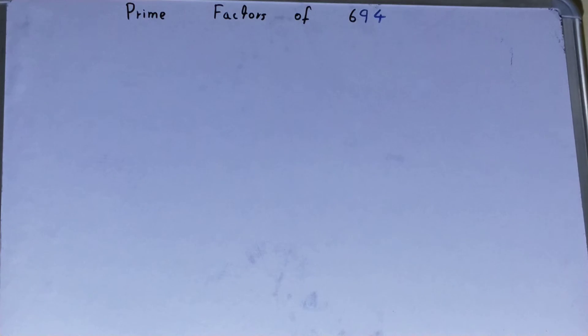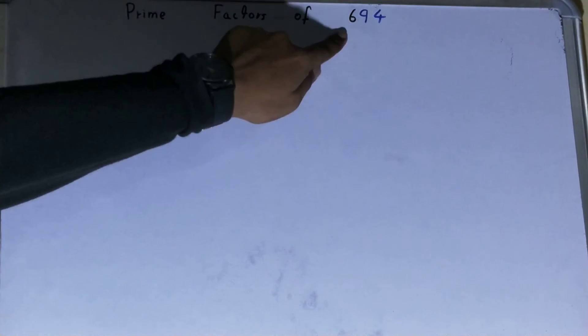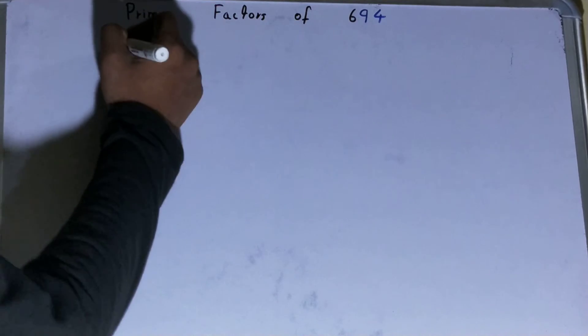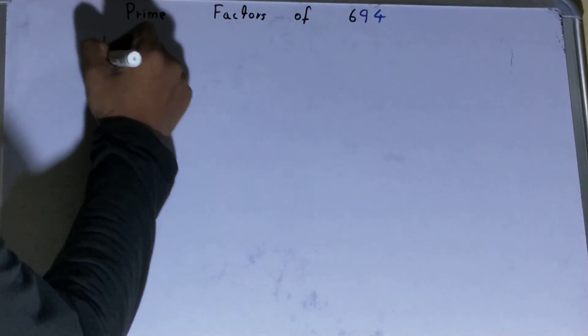Hello friends, and in this video I'll be helping you with the prime factors of the number 694. So let's start. To find out the prime factors of the number 694, you need to write it like this.